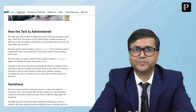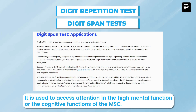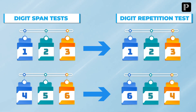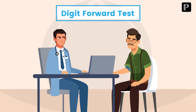What is the examiner assessing by performing this test? The test being conducted is called the digit repetition test or digit span test. It is used to assess attention in higher mental functions or cognitive functions. It has two components — the first is the digit forward test, where the patient repeats the digits in the forward direction, as described in this case.